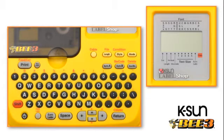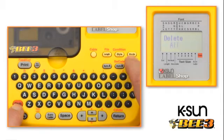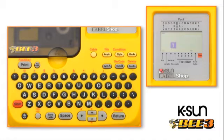Turn the machine on using the ON-OFF key. Press and hold the SHIFT key, then press the DELETE key. DELETE ALL will be displayed in the window. Press RETURN to accept ALL. This action clears all existing settings.